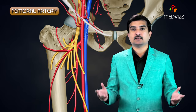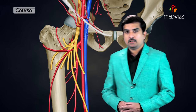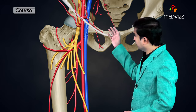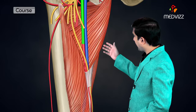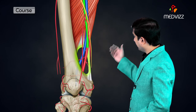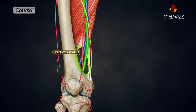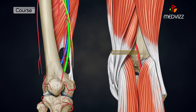Now let us discuss the course of the femoral artery. It descends downwards and medially through the femoral triangle and the adductor canal, enters the adductor hiatus, and then exits into the popliteal fossa on the posterior surface of the knee as the popliteal artery.